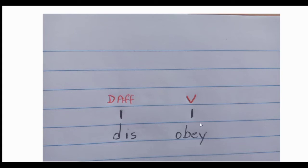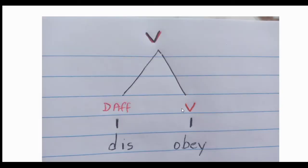The third step is to draw the lines — to link the morphemes with the rest of the word in order to see how the word is structured. In this case, 'disobey' only has two morphemes, so we only draw two lines. You draw a line here and another line here, and then you link them, and you have the verb 'disobey'.